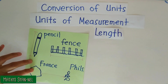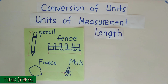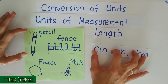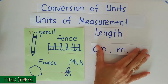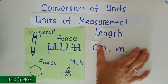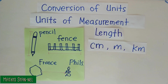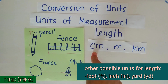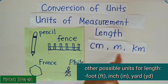Let's talk about length first. In this illustration, you see a pencil, a fence, India, France, and Philippines. If you are going to measure the length of a pencil, you are going to use the unit centimeter, or cm. If you are going to measure the length of the fence, you are going to use meter, or m. If you are going to measure the distance from France to Philippines, you are going to use kilometer, or km. So the units for length could be centimeter, meter, or kilometer. But there are also other units; in this video, I'm going to use these three units for length.